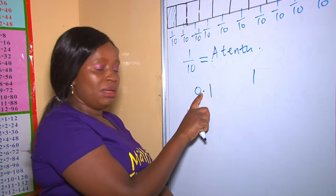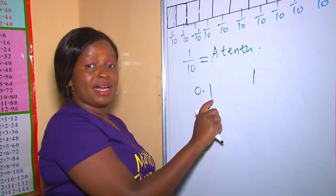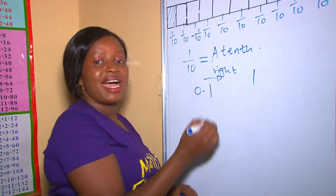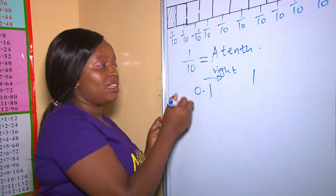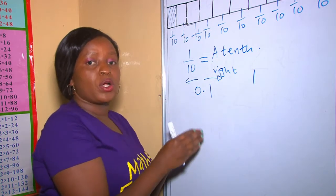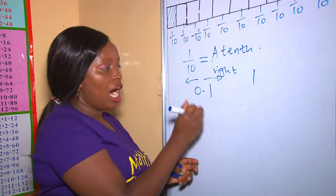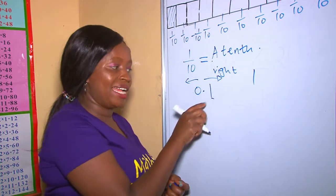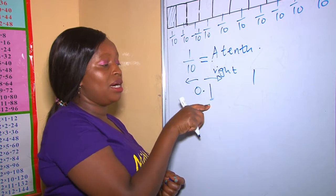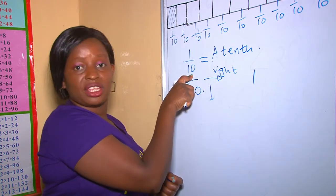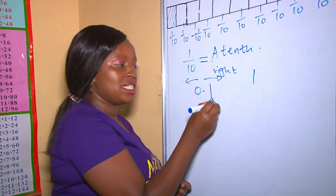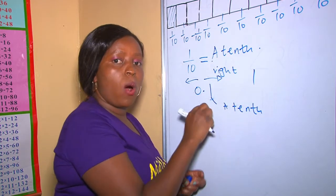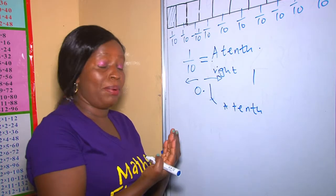So it means that in 0.1, the numbers on the right are less than the numbers on the left. When you compare place value, after the decimal point, the place value of 1 is not 1's — it's tenths. Because remember, this was one tenth. Therefore, the place value of 1 is a tenth, meaning 1 over 10, or 1 out of 10 parts.